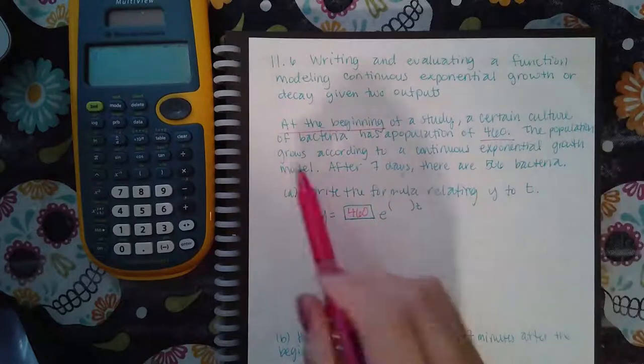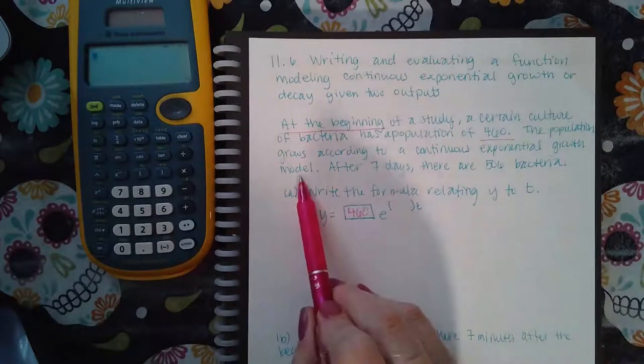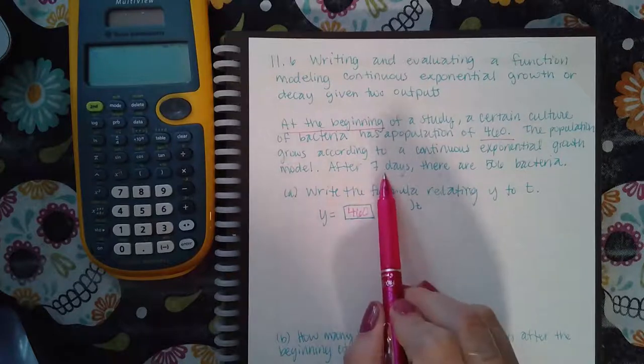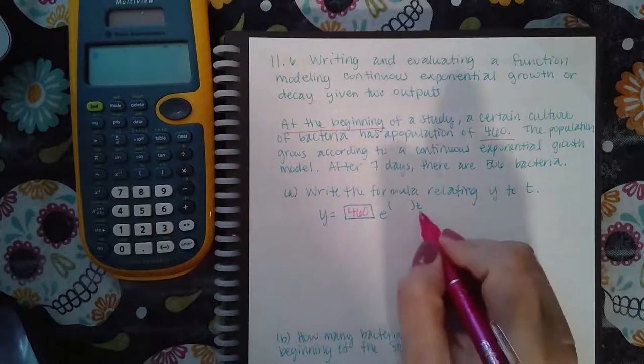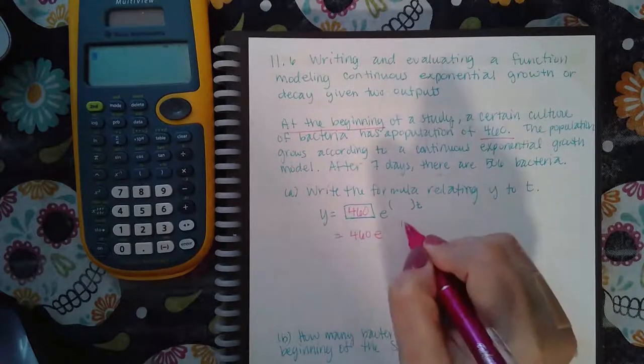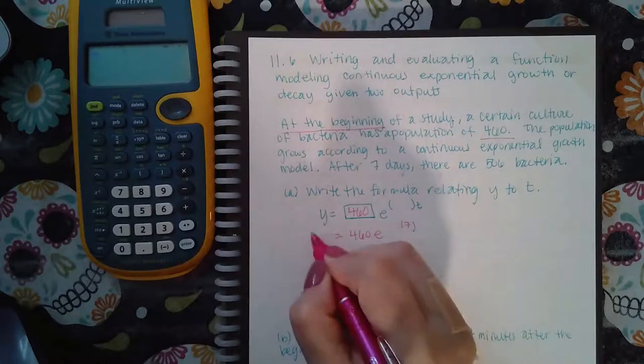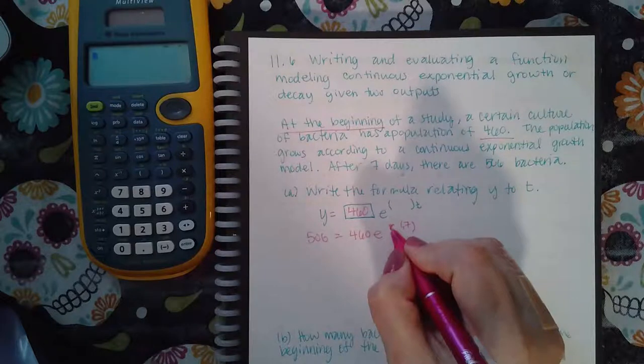Then it says the population grows according to the continuous growth model. So after seven days, there are 506 bacteria. So that means that after seven days, when the time is seven days, the amount that I'm going to have is 506. What I don't know still is the rate.